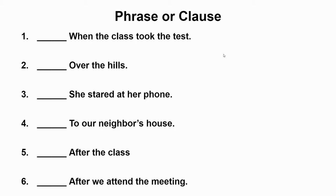'Over the hills' — there is definitely not a predicate. Looking at it, that's actually a prepositional phrase. You have your preposition and your object, hills — that's a phrase. 'She stared at her phone' — 'she' is your subject, 'stared' is your predicate. Subject and predicate — that's a clause.